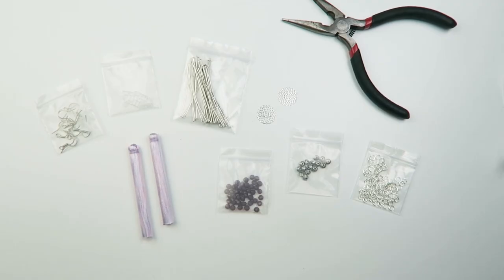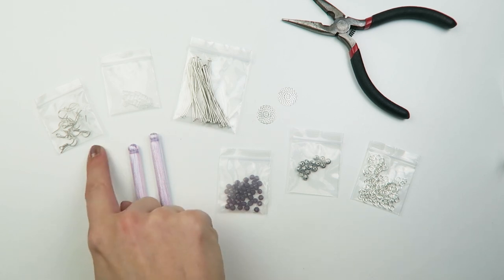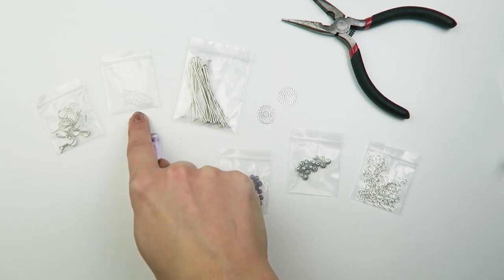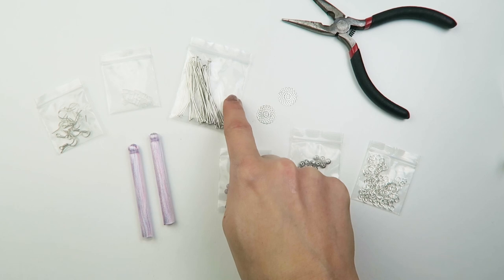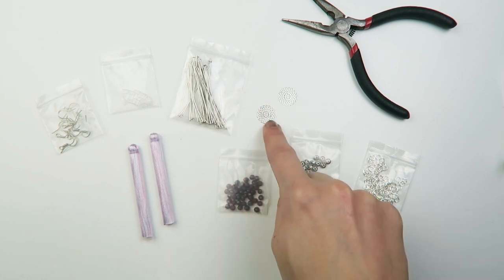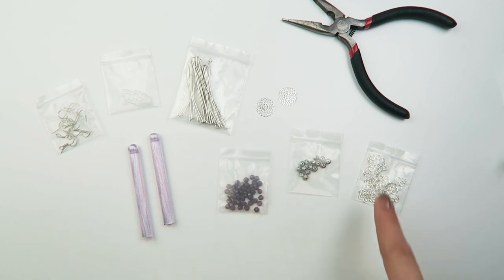For these earrings you're going to need the following materials. Tassels, earring hooks, transparent earring backs, head pins, two connectors. Our bohemian connectors but you can use loads of different styles. I'm going to use 4mm jump rings, spacer beads and 4x3 faceted beads.